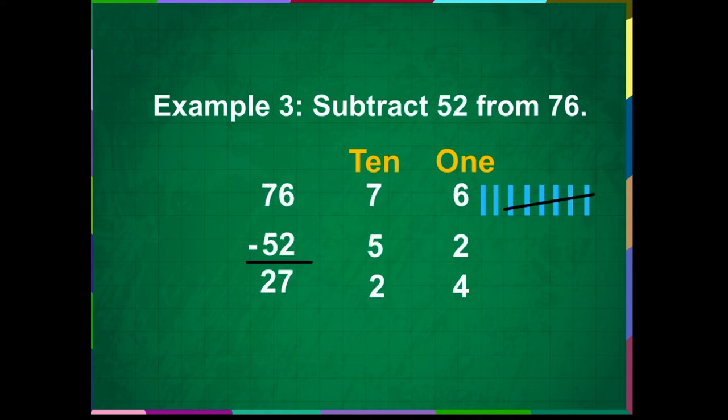We know that 76 has 7 tens and 6 ones. We also know that 52 has 5 tens and 2 ones. Place the digits as shown on the screen.